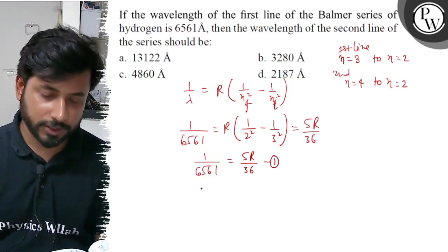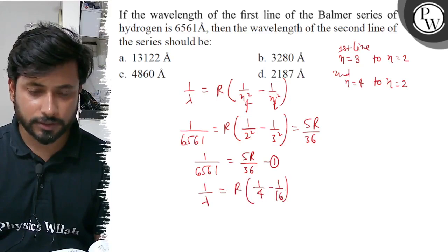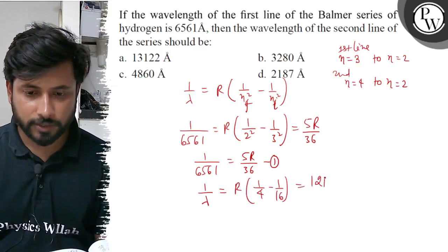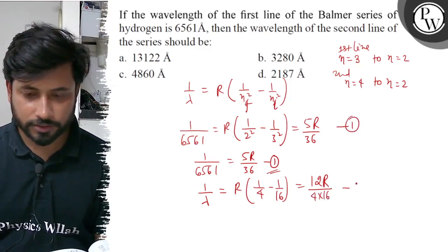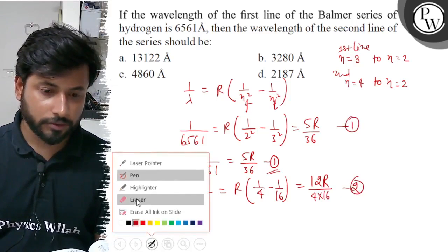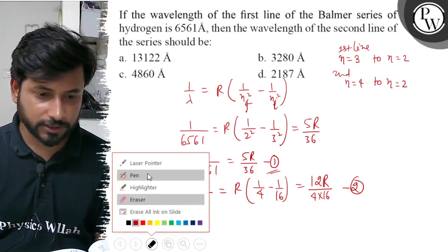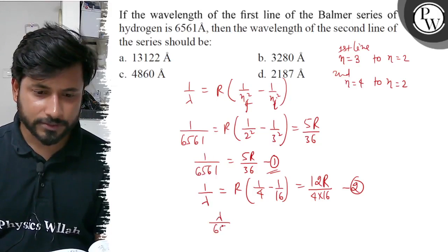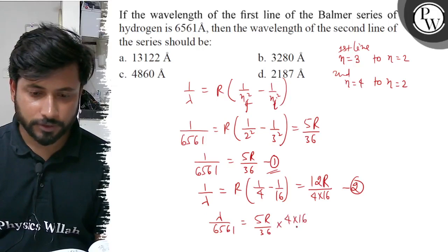For the second line, 1 by lambda equals to R times (1 by 2 squared minus 1 by 4 squared), which is 1/4 minus 1/16. That gives 12R by (4 into 16), which is 12R by 64. Taking the ratio of equation 1 to equation 2: lambda by 6561 equals to (5R by 36) times (4 into 16 by 12R).